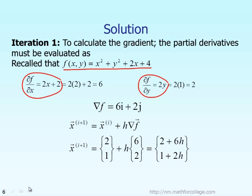Together, the partial derivative of f over x and the partial derivative of f over y give you the gradient of the function f. If you evaluate that gradient at the initial guess x equal to 2, y equal to 1 — replacing x by 2 and y by 1 — the gradient of f equals 6i plus 2j, where i and j are unit vectors along the x and y directions respectively.